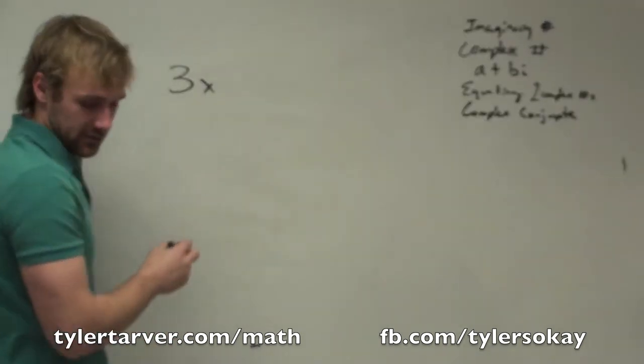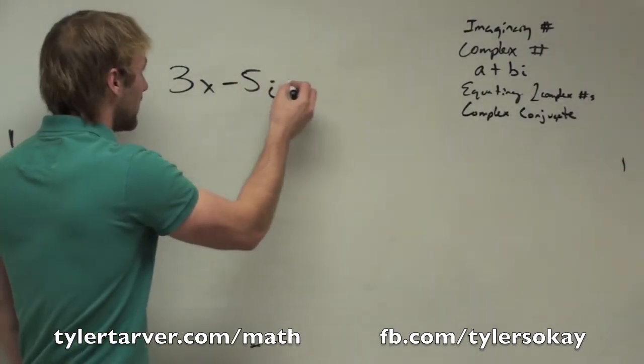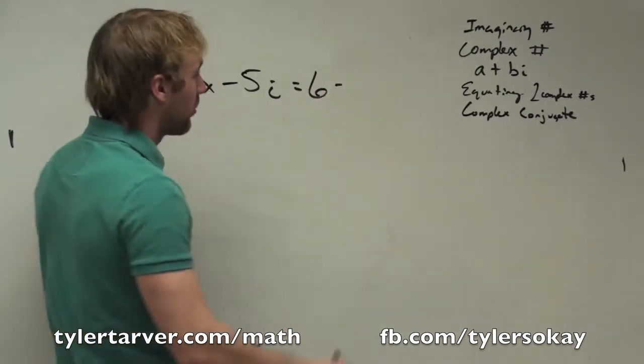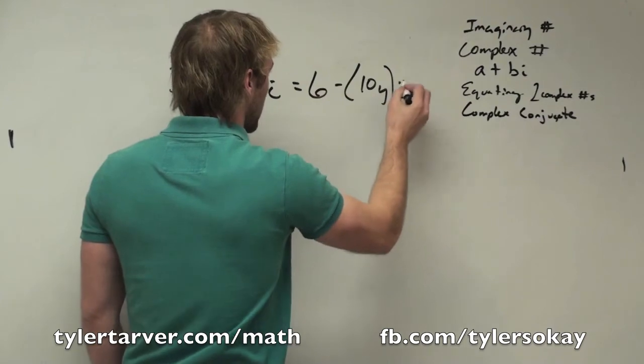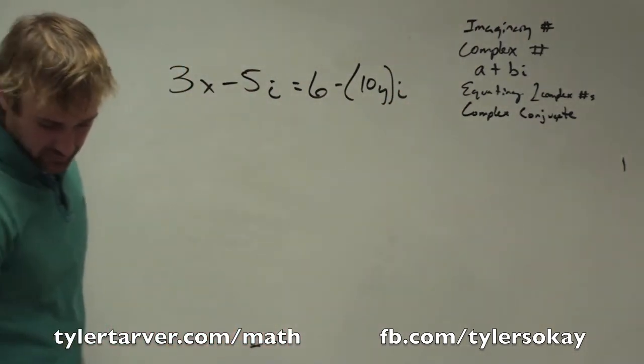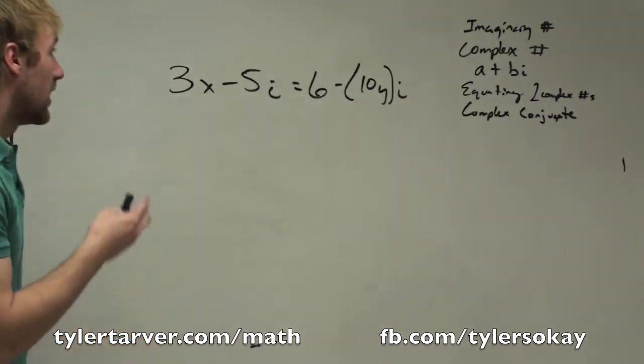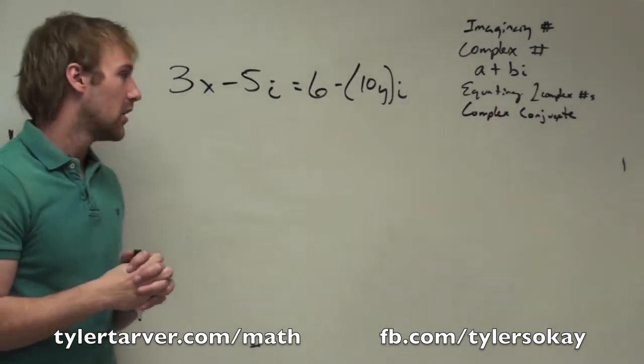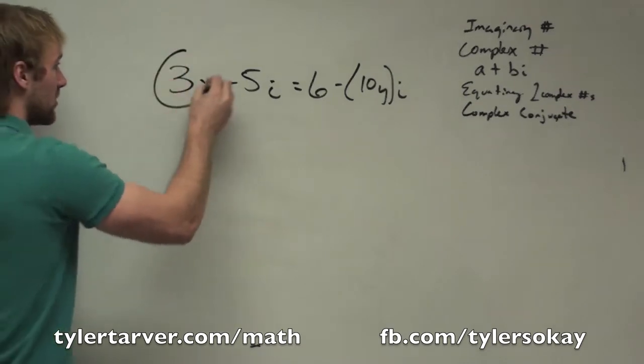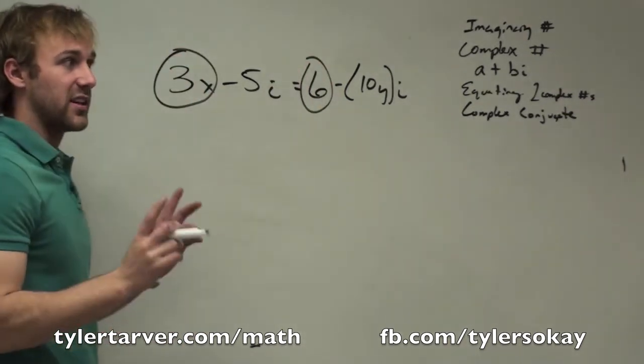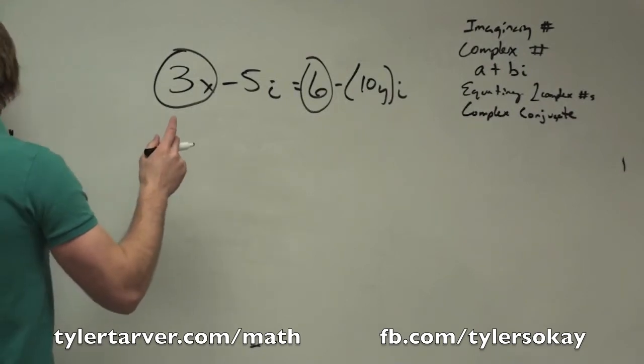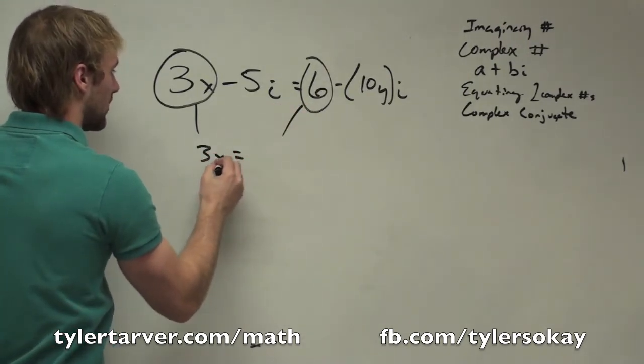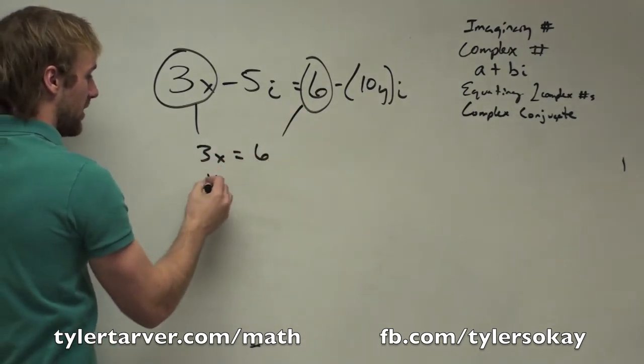Now, let's go back to complex numbers. Let's say you've got 3x minus 5i equals 6 minus 10yi. Now, what we can do is, if we want to solve this, the phrase they use is equating two complex numbers. What you do is, you take your real numbers, which would be these two. They're real because they don't have i. You would take the real numbers and you would set them equal to each other. You can solve it. Divide by 3. X equals 2.